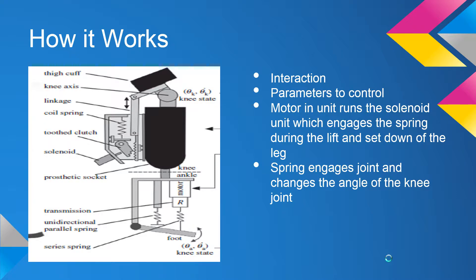As you can see in the motor unit — this part right here — this runs all of this section. The solenoid pushes into a clutch, which engages the spring. The spring is connected to a mechanism that then allows for the angle of our knee to bend. We had to figure out how to take into account all of these interactions.